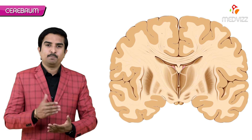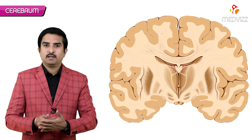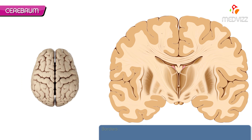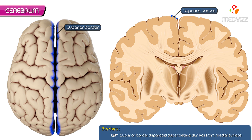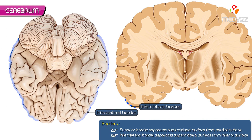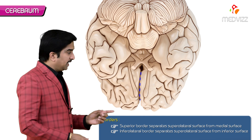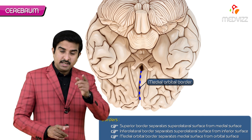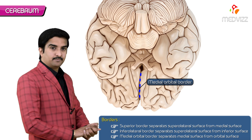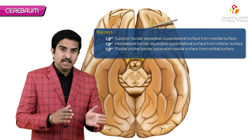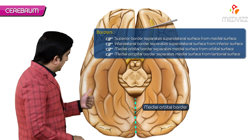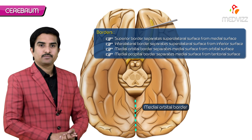There are four borders: superior, infralateral, medial orbital, and medial occipital. The superior border separates the supralateral surface from the medial surface. The infralateral border separates the supralateral surface from the inferior surface. The medial orbital border separates the medial surface from the orbital surface.